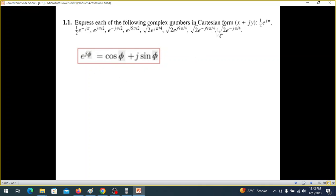First of all, we know that this can be converted into Cartesian form by using Euler's formula, which is e^(jφ) can be written as cos φ plus j sin φ. And if something is multiplied with it like R, then R will multiply with both cosine and sine. This is called the polar form, and this one is a rectangular form or Cartesian form.